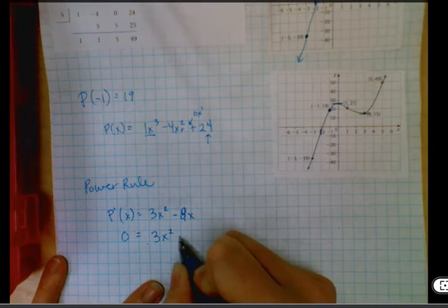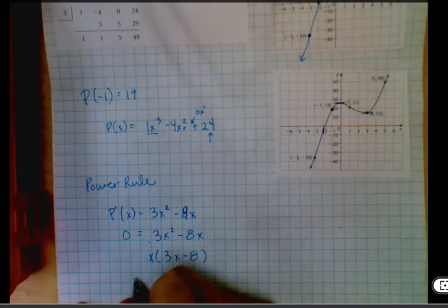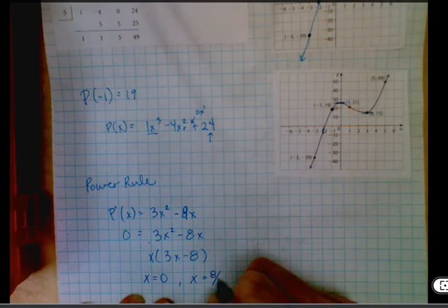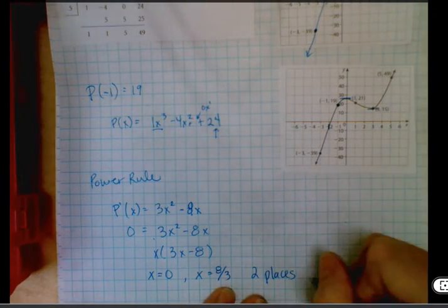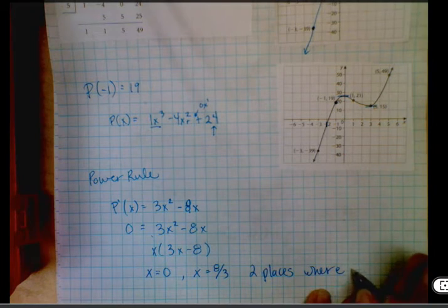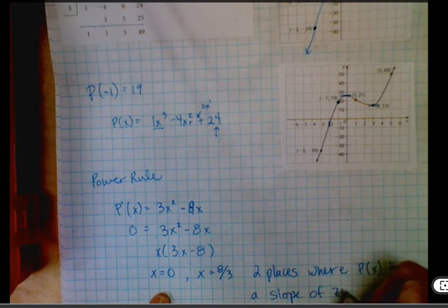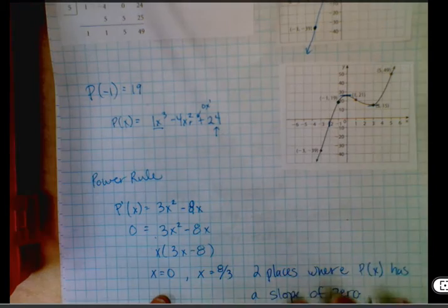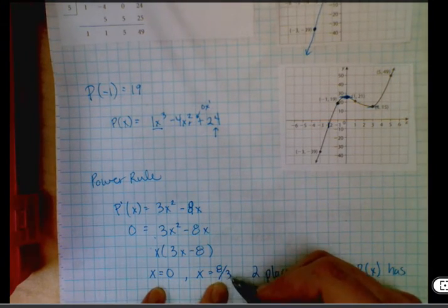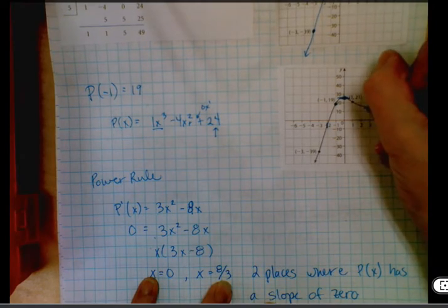So we're going to solve this, and we're going to pull our x out and get 3x minus 8. So x equals 0, and x equals 8 thirds. So these are the two places where our original function here has a slope of 0, because this equation gives us all of the different slopes. So at 0, we have a slope of 0 and 8 thirds, so that's like 2 and 2 thirds, so almost right here. So that's our second place we have a turn.